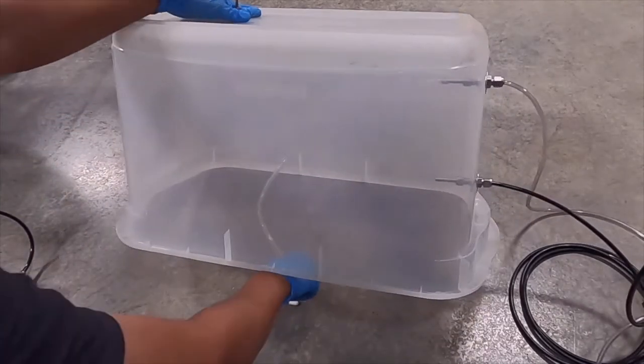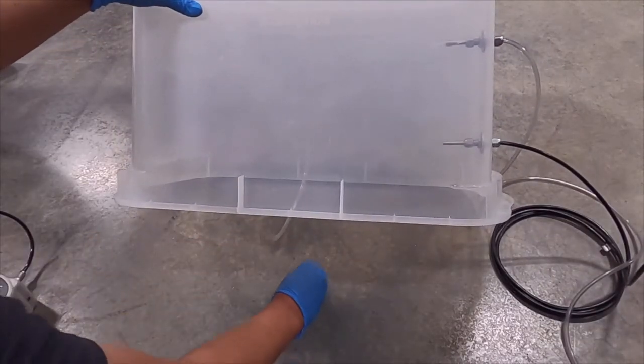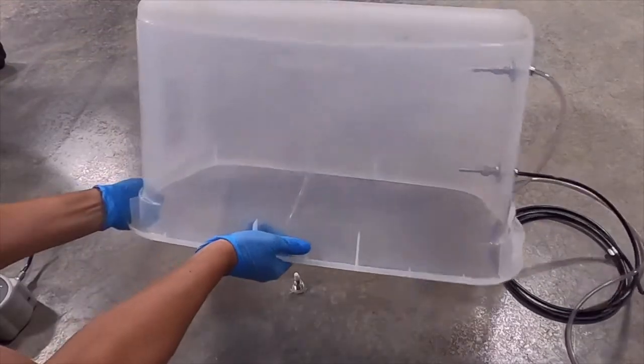Following the helium leak test of the sample point, the shroud can be removed and the tubing disconnected. The point is now ready for sampling.